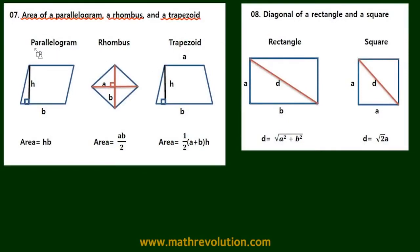So first, a parallelogram, the area is A times B. Now in rhombus, the area is A times B divided by 2, and in trapezoid, the area is A plus B times height over 2.